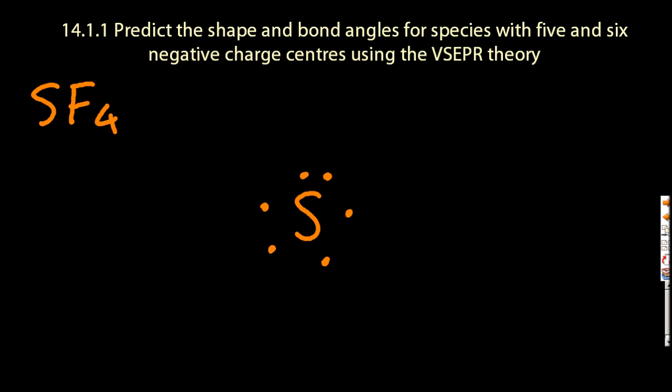Sulfur tetrafluoride. Sulfur's in group six, so I put six valence electrons around. Put the fluorines in, all those little dots or electrons, in pairs. You can see that the sulfur has a lone pair.